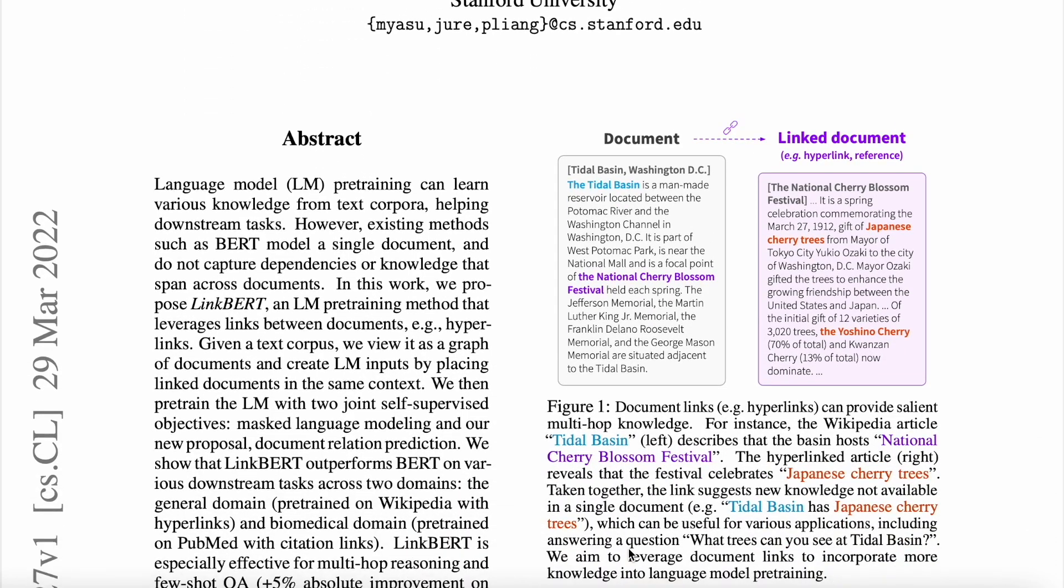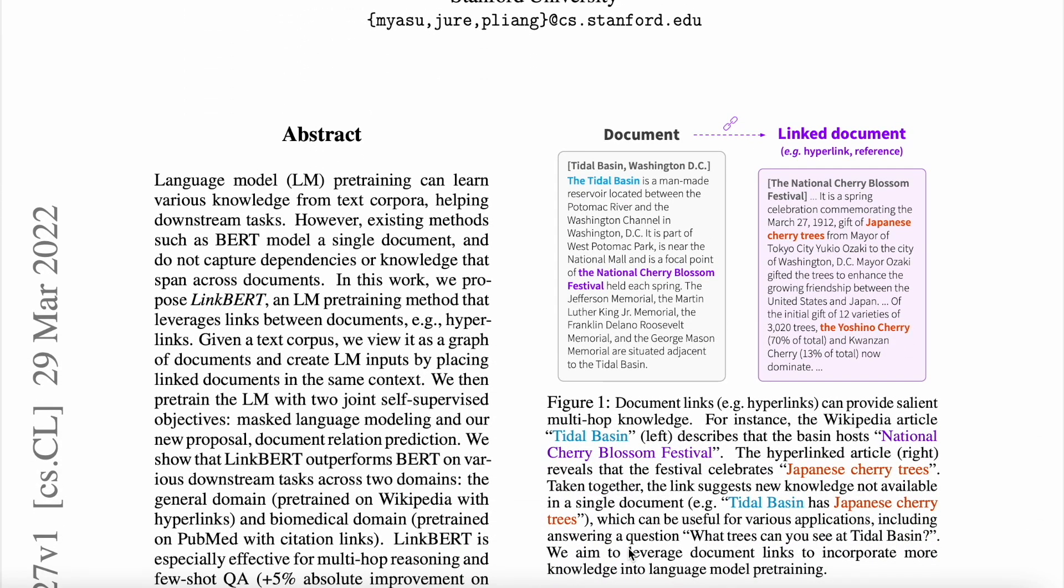They say language model pre-training can learn various knowledge from text corpora, helping downstream tasks. However, existing methods such as BERT model a single document and do not capture dependencies or knowledge that spans across documents. So yeah, this is very much true.